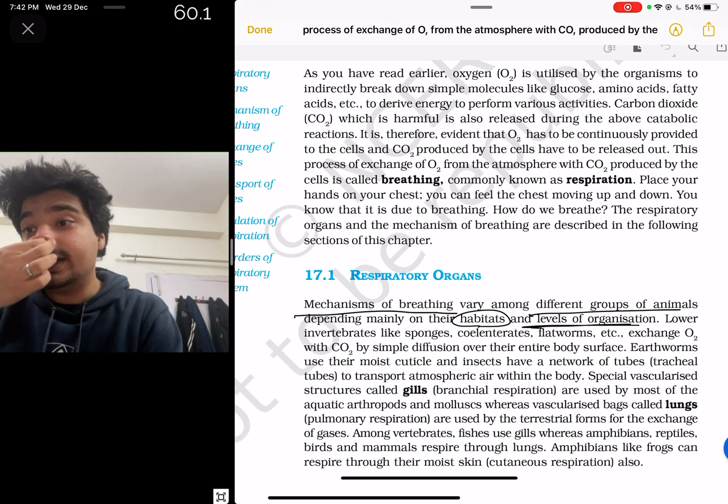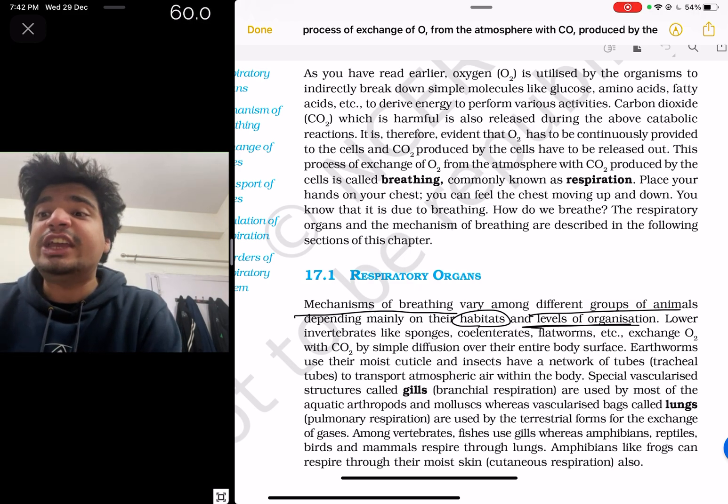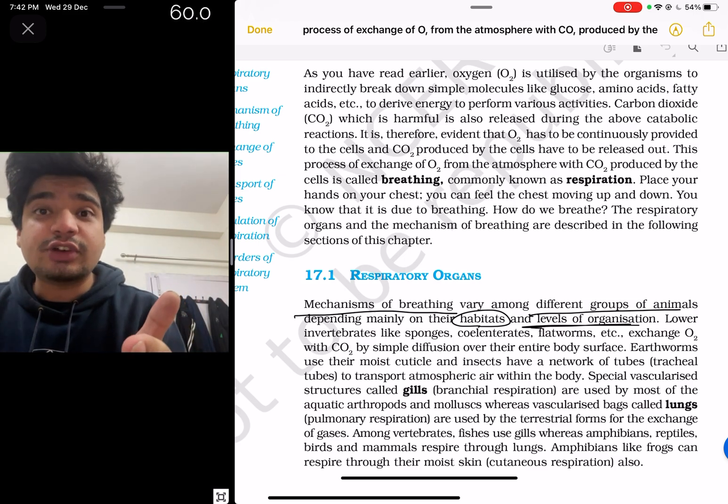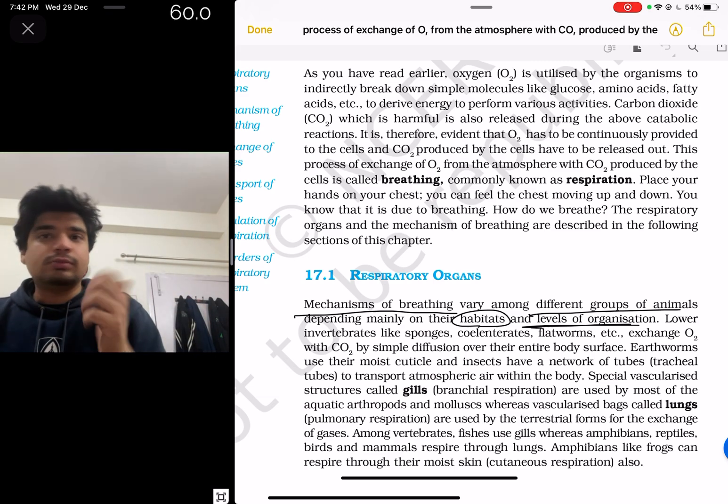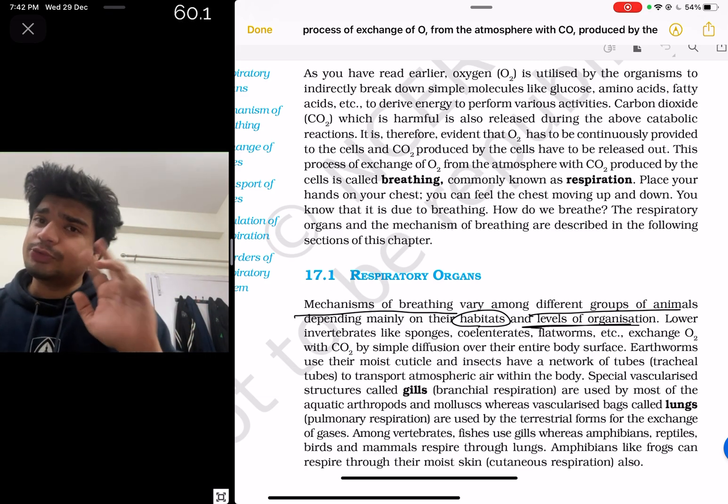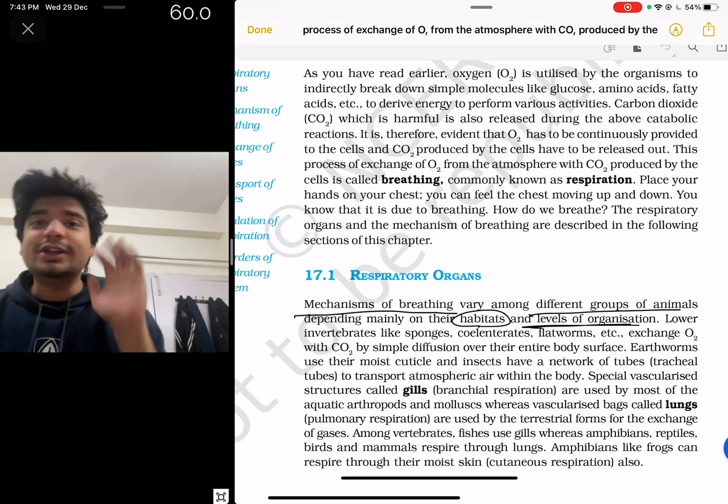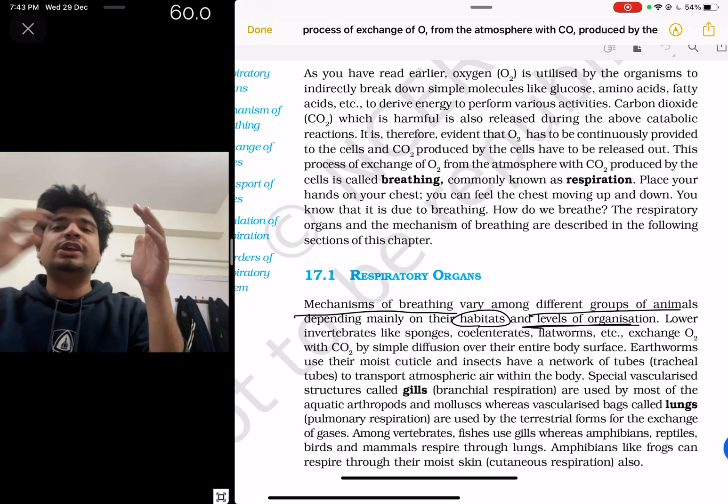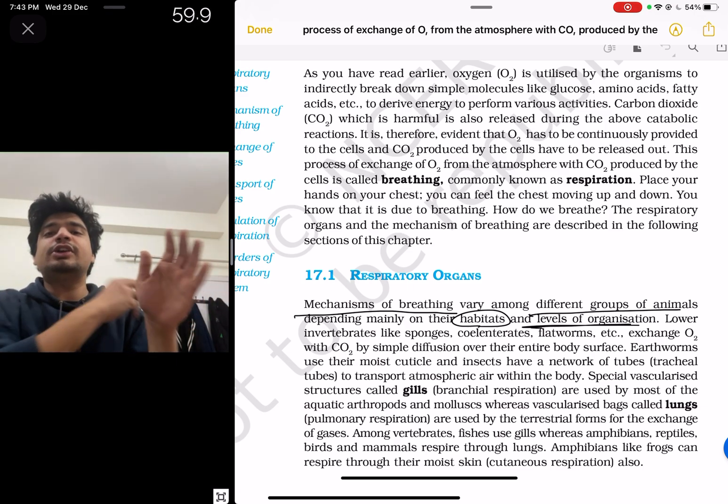Then, special vascularized structures called gills are used by most of the aquatic arthropods and mollusks. Vascularized structure is a structure for breathing. Surface - not vascularized. Tracheal tubes - not vascularized. Moist cuticles - not vascularized. Gills - vascularized. Vascularized means that there are blood vessels which will take oxygen and will help remove carbon dioxide.